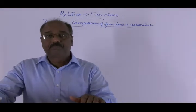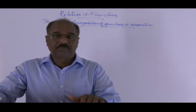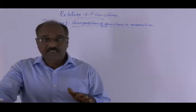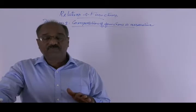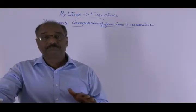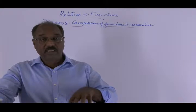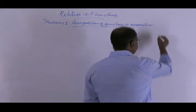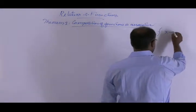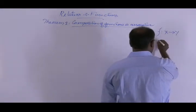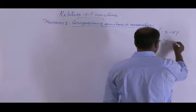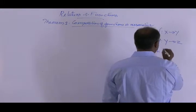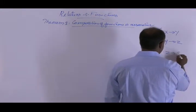Now, a theorem. The first theorem in chapter 1, after relations and functions. This theorem says that the composition of functions is associative. That is, if f is a function from X into Y, and g is a function from Y into Z, and h is a function from Z into S.